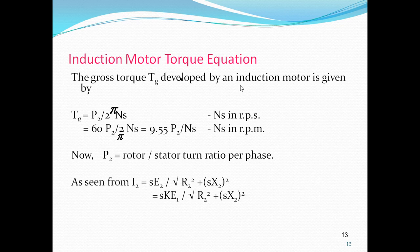Key observations: when the speed is synchronous speed, that is NR = NS, then slip equals 0 and torque equals 0. In the induction motor, when speed equals synchronous speed, slip = 0 and torque = 0.